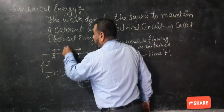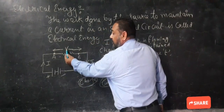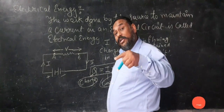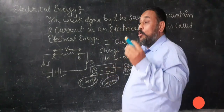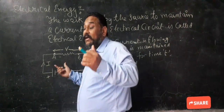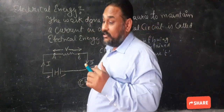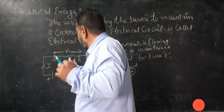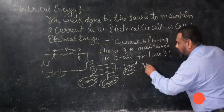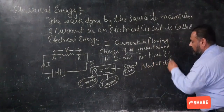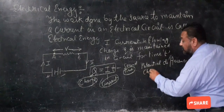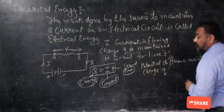Now we apply a potential difference V in this electrical circuit. This potential difference V is applied to maintain the charge Q in the electrical circuit. So potential difference maintains charge Q in the circuit.